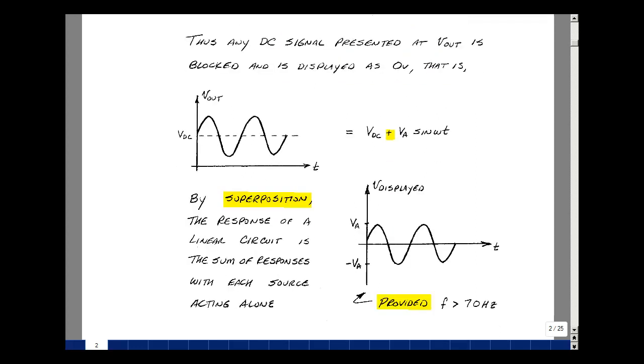Again, since we are using a linear circuit, we can apply superposition and add the two results. So we get 0 volts added to our sinusoid, which had an amplitude of V_A. Again, this is true provided the frequency is greater than 70 hertz. In fact, we have blocked the DC and just passed the AC. This is important in many transistor circuits where the AC signal is very small and the DC signal is quite large.